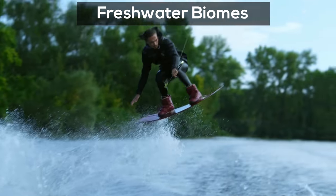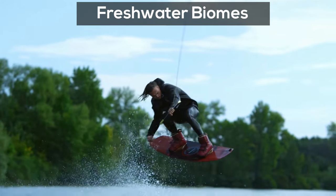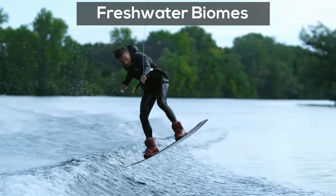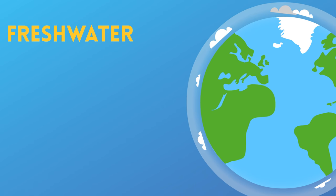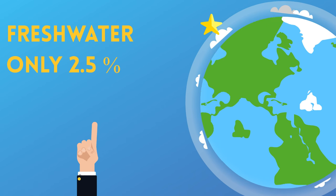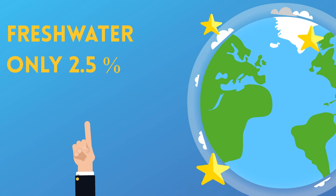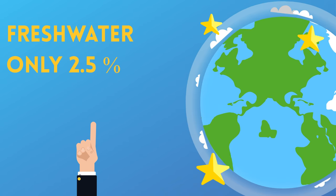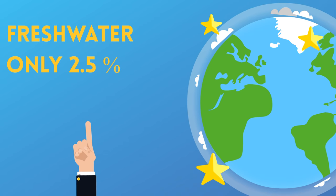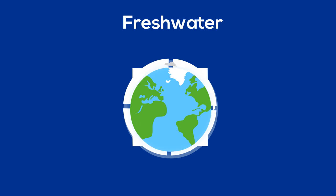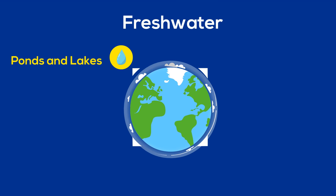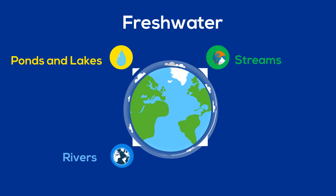The earth has lots of water on it. However, only about two and a half percent of it is freshwater. This freshwater can be broken down into several biomes including ponds, lakes, streams, rivers, and wetlands.